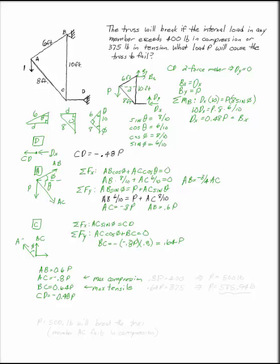Well, the maximum compression load has got to be 400 pounds because any bigger than 400 pounds and you've broken the truss. That gives you a P load of 500 pounds. The maximum tensile load is 0.64P, because any bigger than that, and you've broken the truss. This gives you a P is 585.94 pounds.